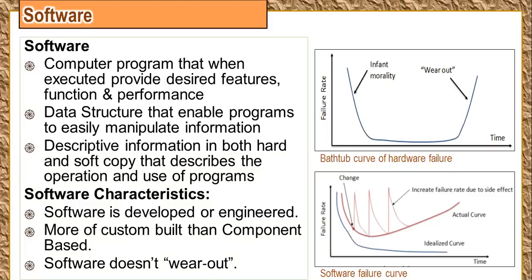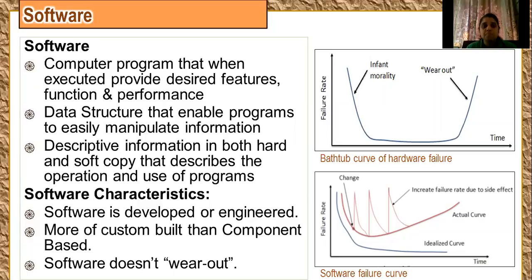The third part of software is descriptive information in both hard and soft copy — what we mean by this is a manual. A manual is something that comes along with a software. Be it a desktop application or a software you are buying. Let us take an example of Windows operating system: along with an operating system, you have a help section for it.